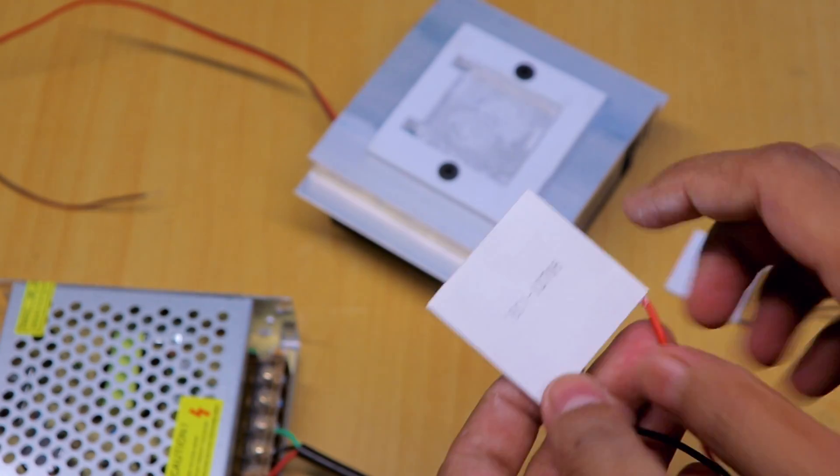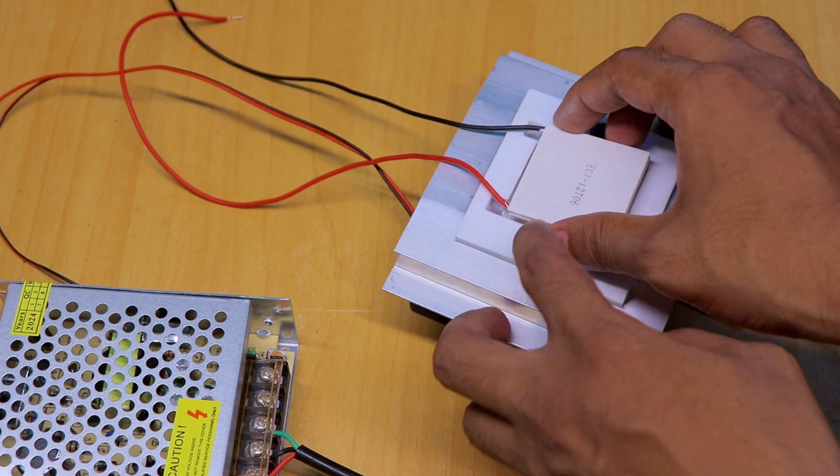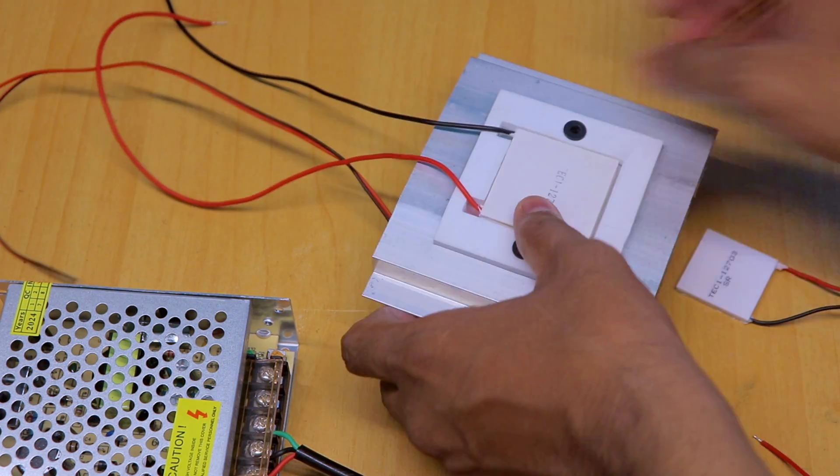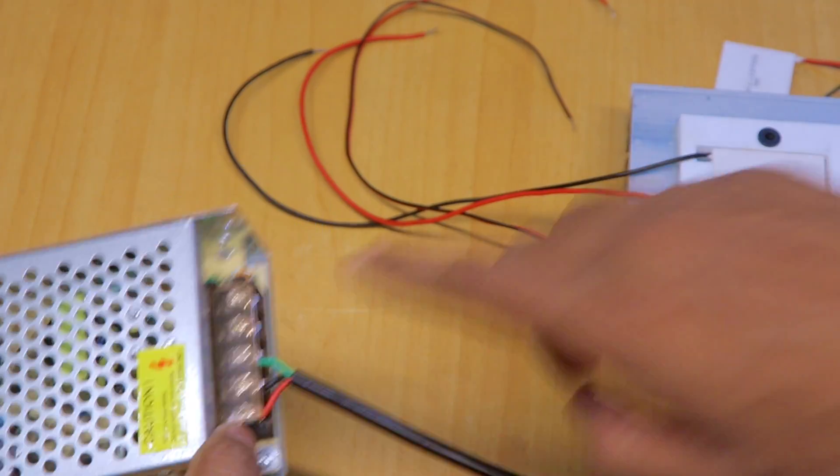So first, test this 12706 module. The hot side will be placed here on the heatsink. Now these wires need to connect to this power module.